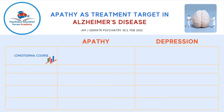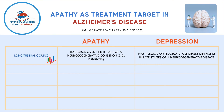Another important criterion is the longitudinal course. With apathy, symptoms can increase over time if it is part of a neurodegenerative condition like dementia. With depression, it may resolve or fluctuate, and in the late stage of neurodegenerative disease it may even diminish as progression happens, whereas apathy will continue to worsen.